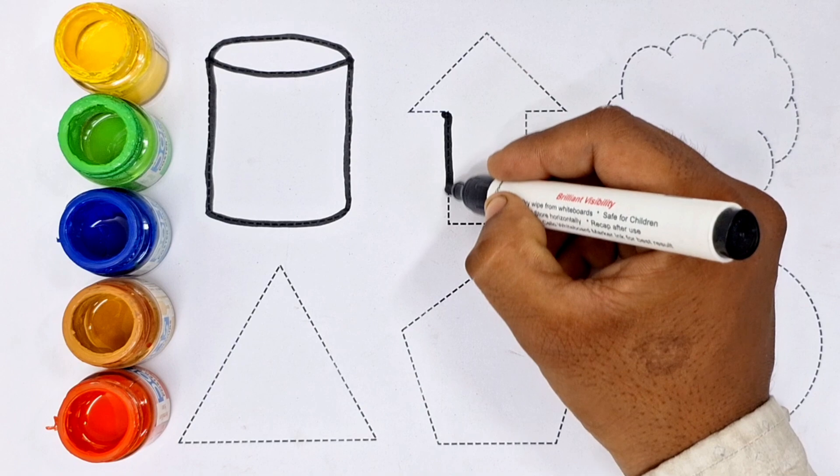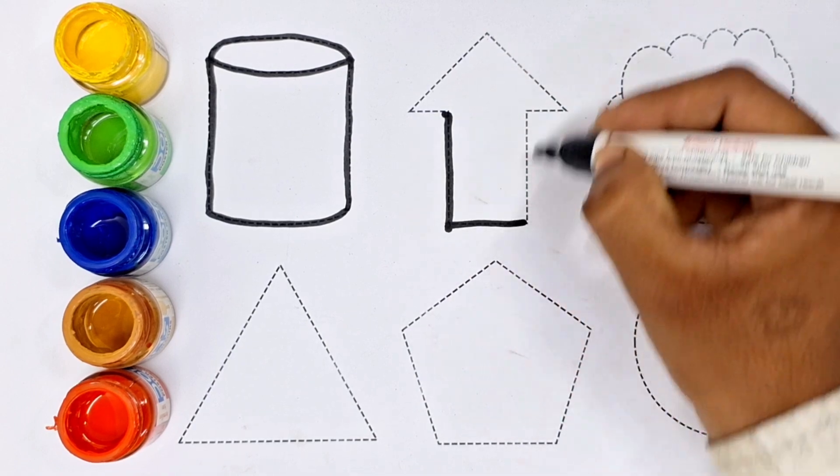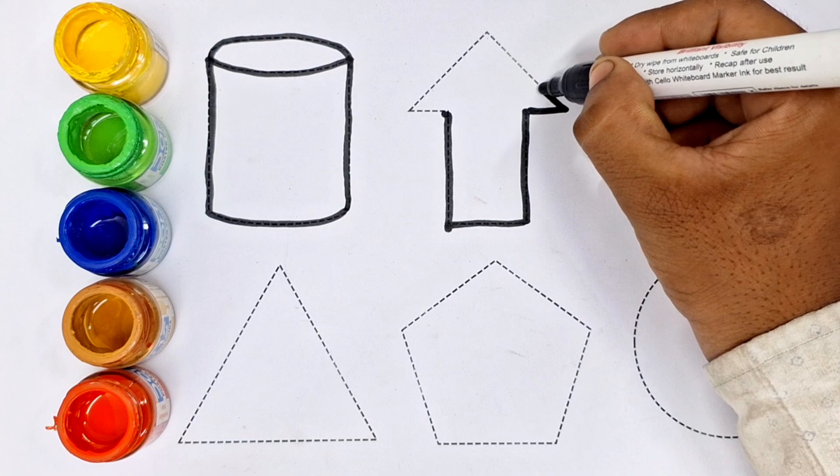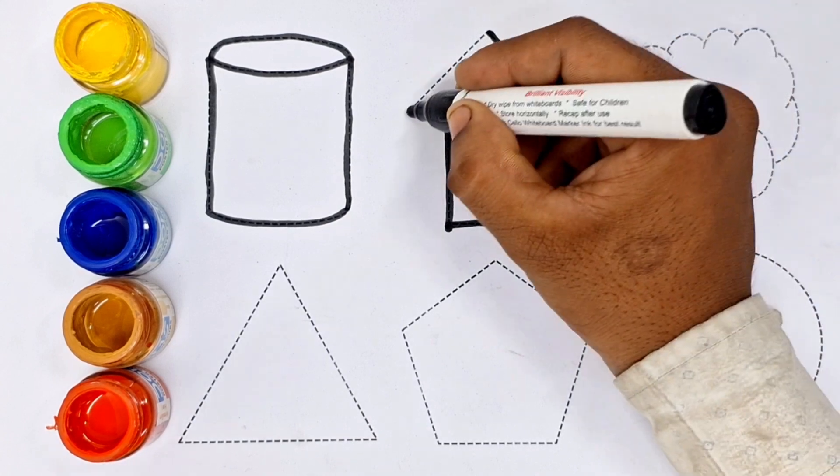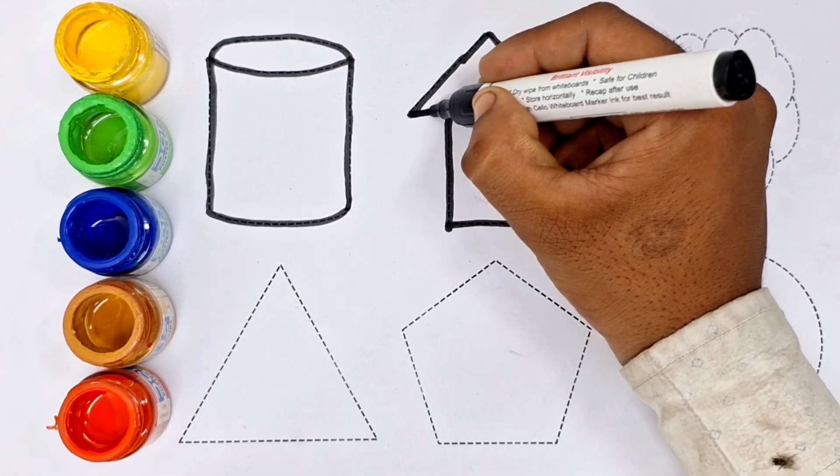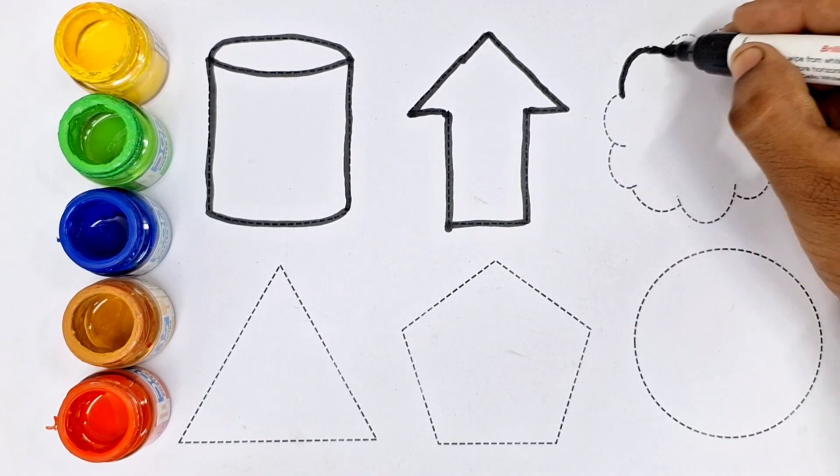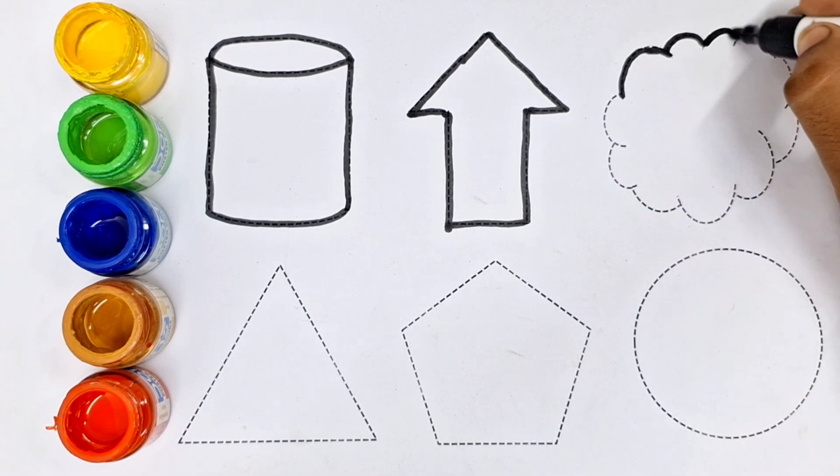This shape, what do you think? Which shape is? The shape of the arrow. This shape is the shape of the arrow.